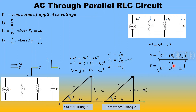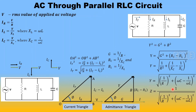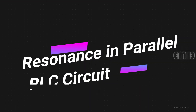Expanding: Y = √((1/R)² + (ωC − 1/ωL)²). Since impedance Z = 1/Y, therefore Z = 1 / √((1/R)² + (ωC − 1/ωL)²). These are the parameters related to the parallel RLC circuit. Now we will discuss resonance in the parallel RLC circuit.